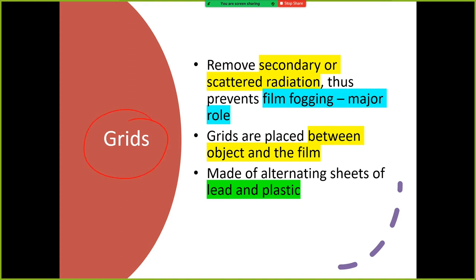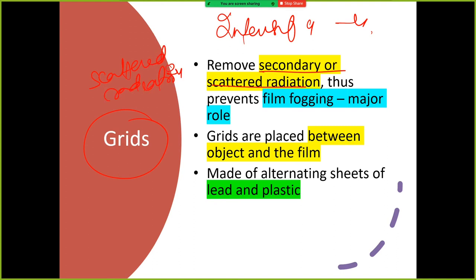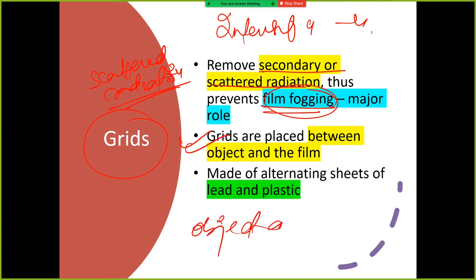Now let's talk about grids. Grids remove secondary and scattered radiation, thus preventing film fogging. Film fogging is when the quality of the film has a foggy layer — image quality is reduced. Grids are placed between the object and the film. This is very important: grids are placed between the object and the film.